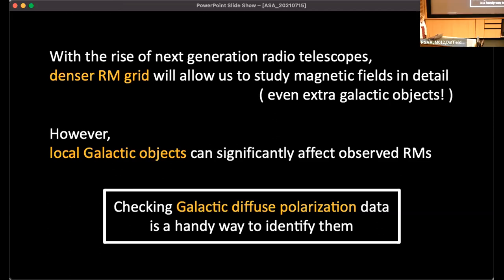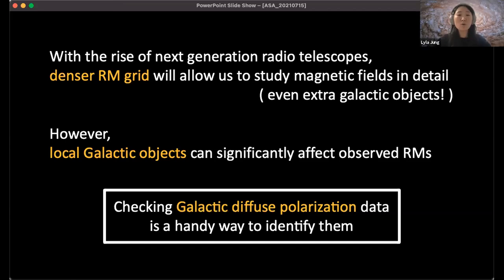A question from Jake Clark: what extragalactic sources will you be able to detect? If asking about extragalactic objects that can be studied using the RM grid technique, there is one study using POSSUM data recently studying the RMs on a galaxy cluster. That kind of study really requires high RM density, so galaxy clusters would be one example of extragalactic sources.